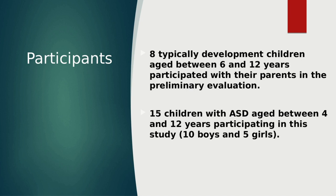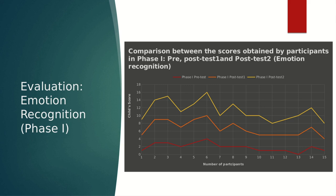For the preliminary evaluation, typically developing children without ASD, aged between 6 and 12 years, were asked to identify the meaning of the gestures to ensure that the gestures used by the virtual robot could be recognized. The findings show that the animated gestures performed by the virtual robot are recognizable with a consistency rate of 75% or above. Currently, 15 children with ASD are participating in the study — 10 boys and 5 girls — and the evaluation process is still ongoing.